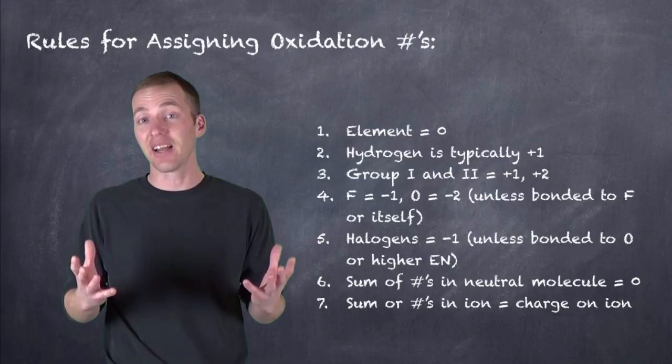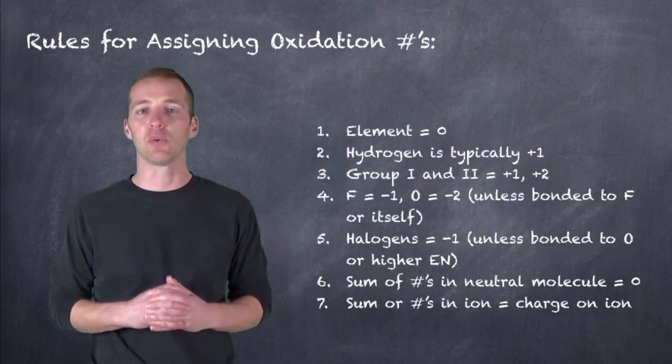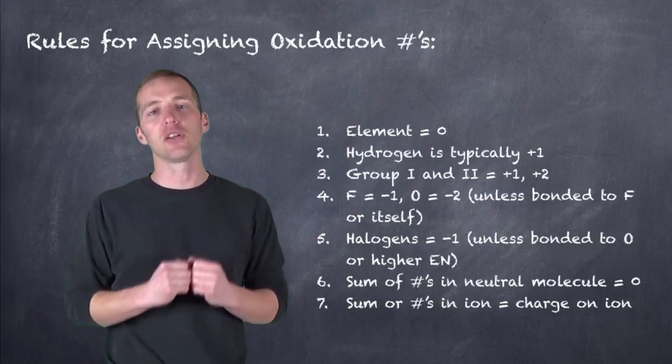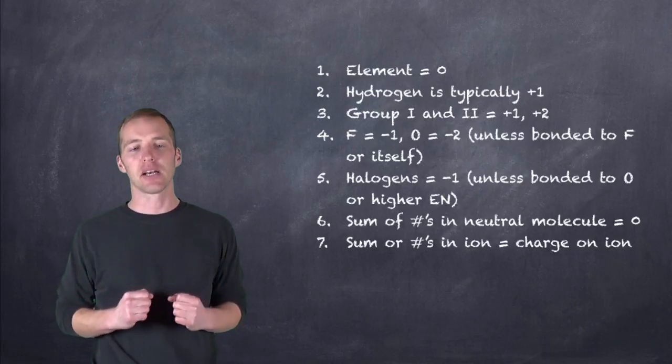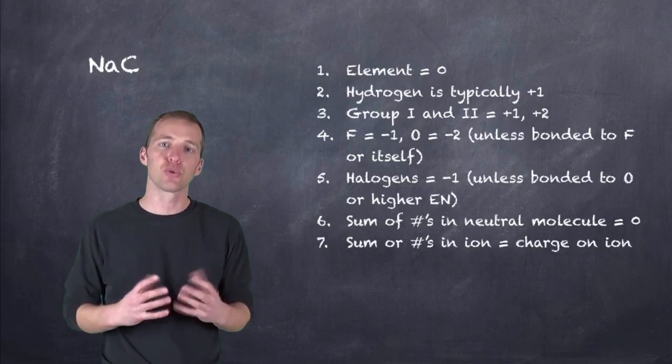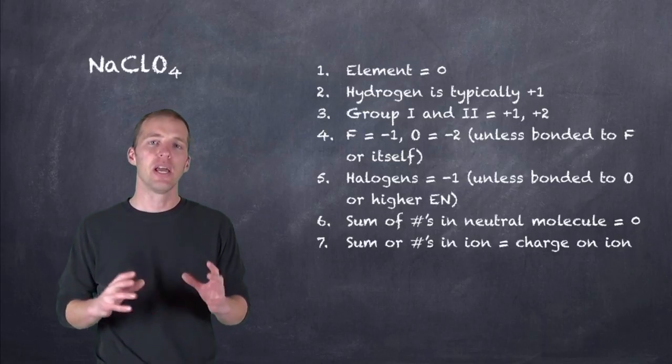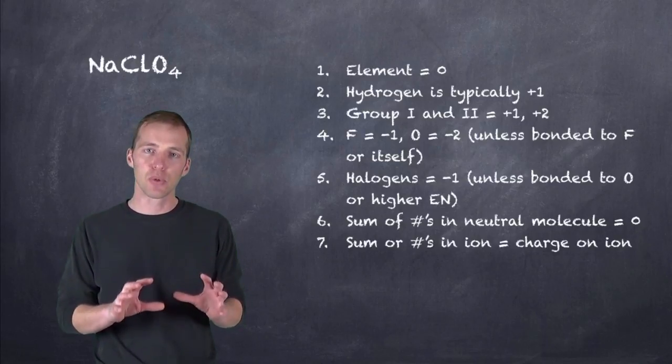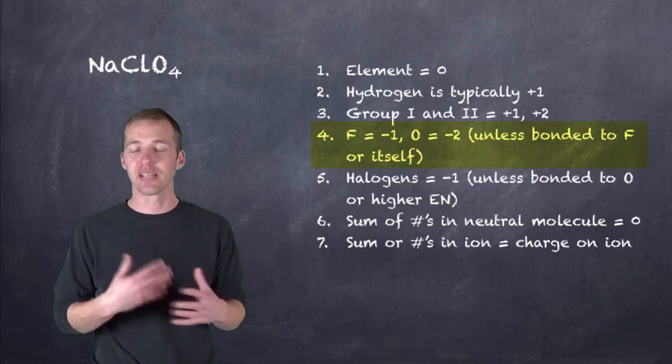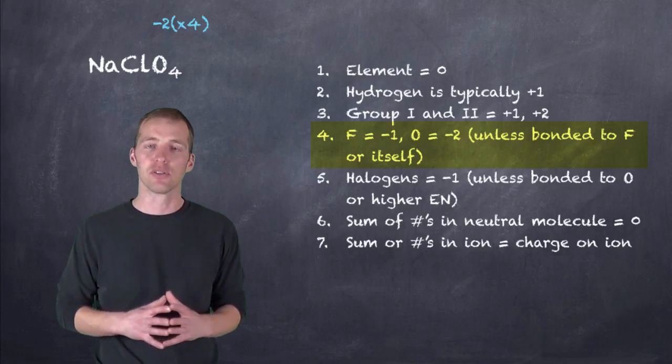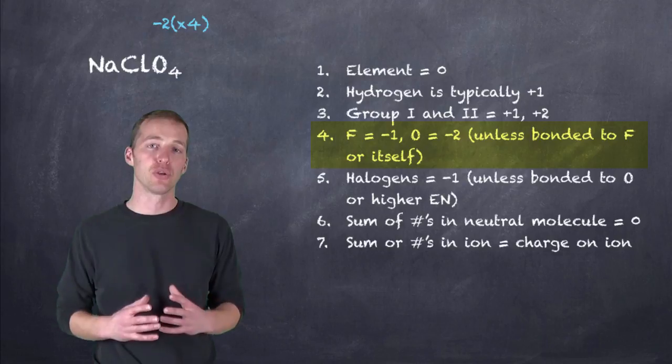So let's take a look at an example really quickly. We'll take a look at sodium perchlorate. Ultimately, this is a neutral compound, so all of these oxidation numbers have to add up to zero. If we take a look at the set of rules, the easiest one to start with is oxygen because it's not bonded to itself, it's bonded to the chlorine, it's bonded to the sodium, and it's not bonded to fluorine. So we know that oxygen is going to be minus two.